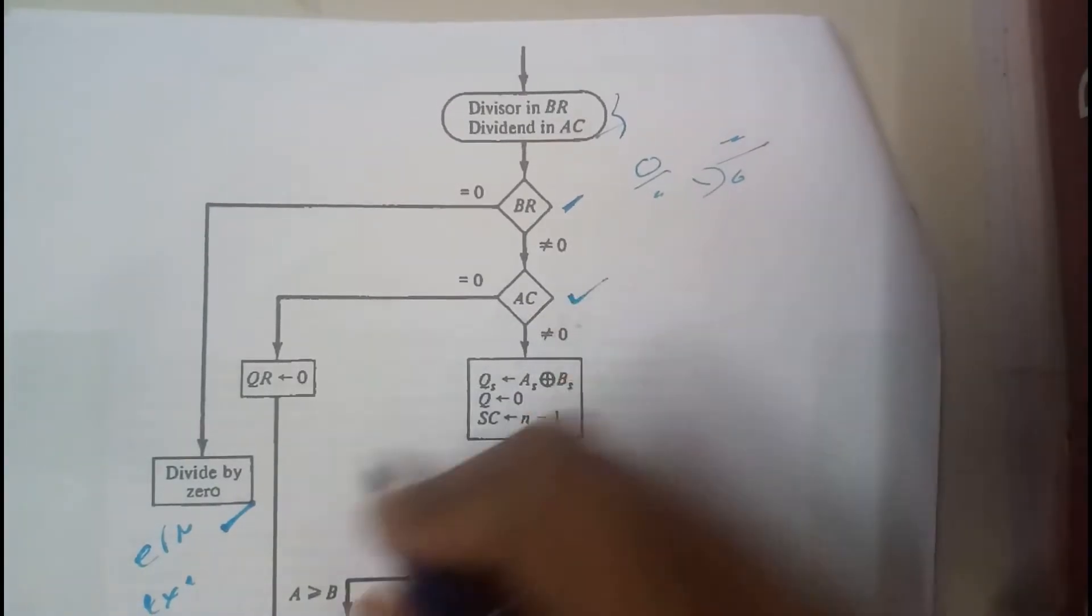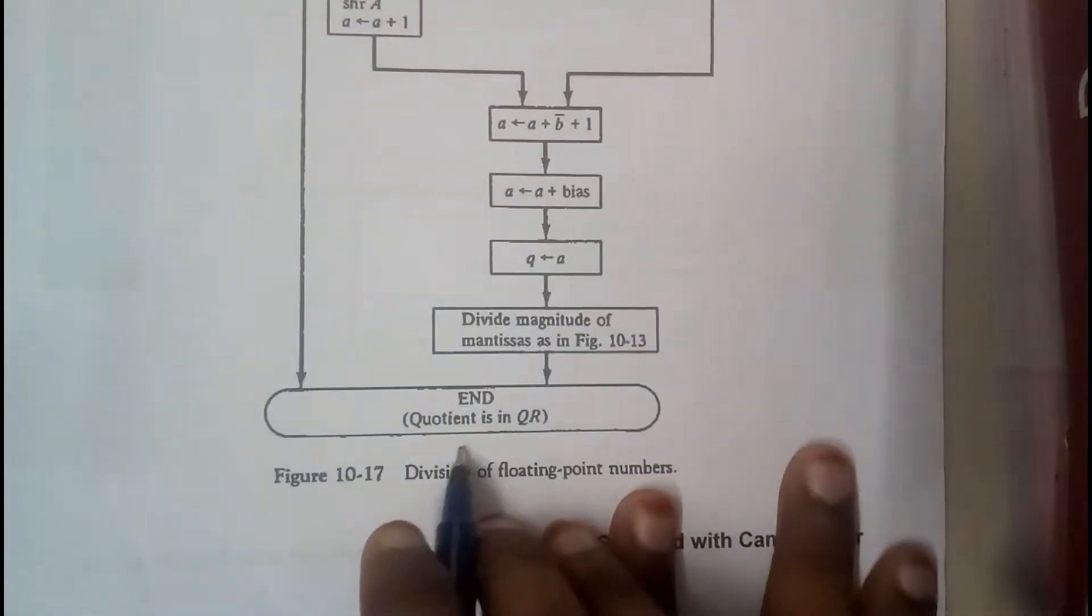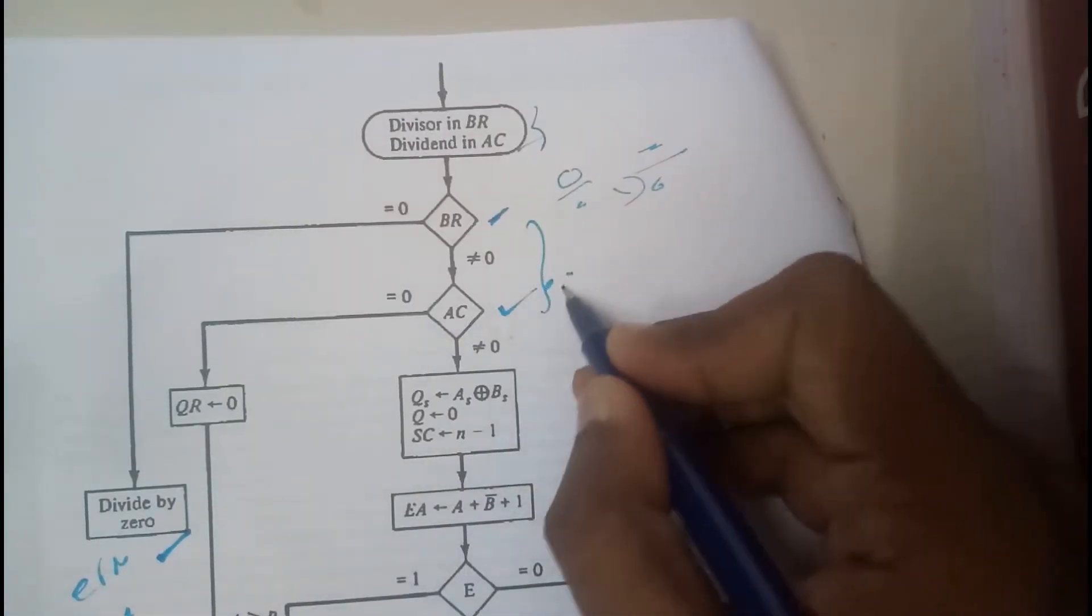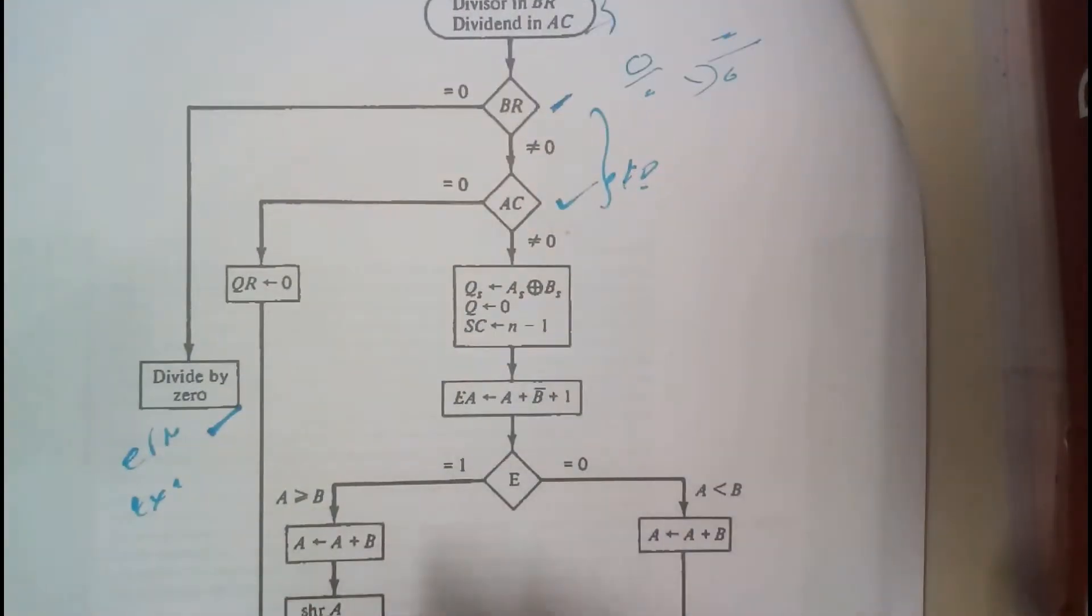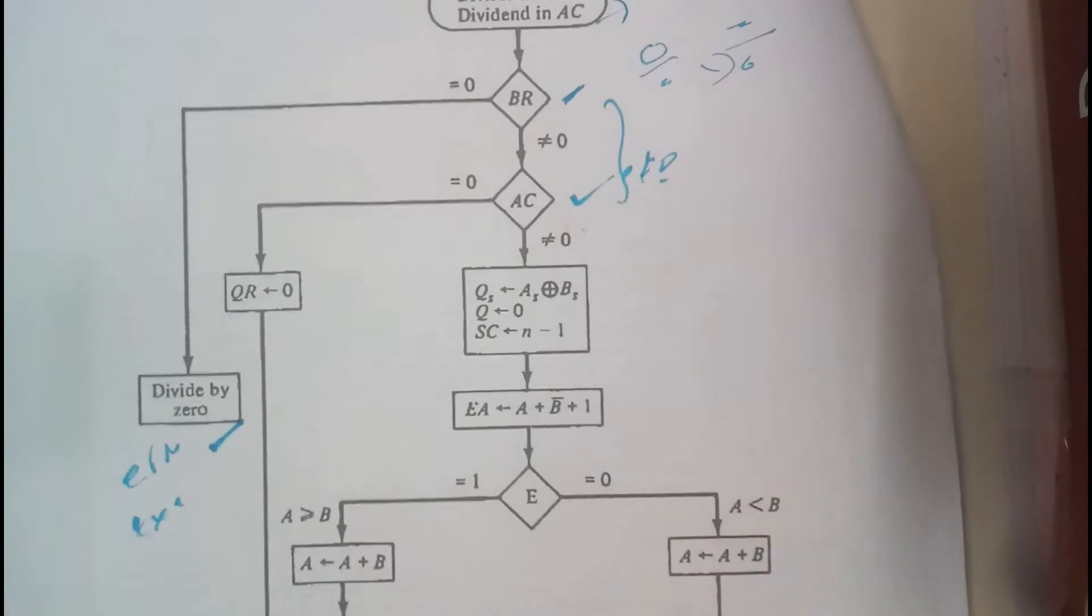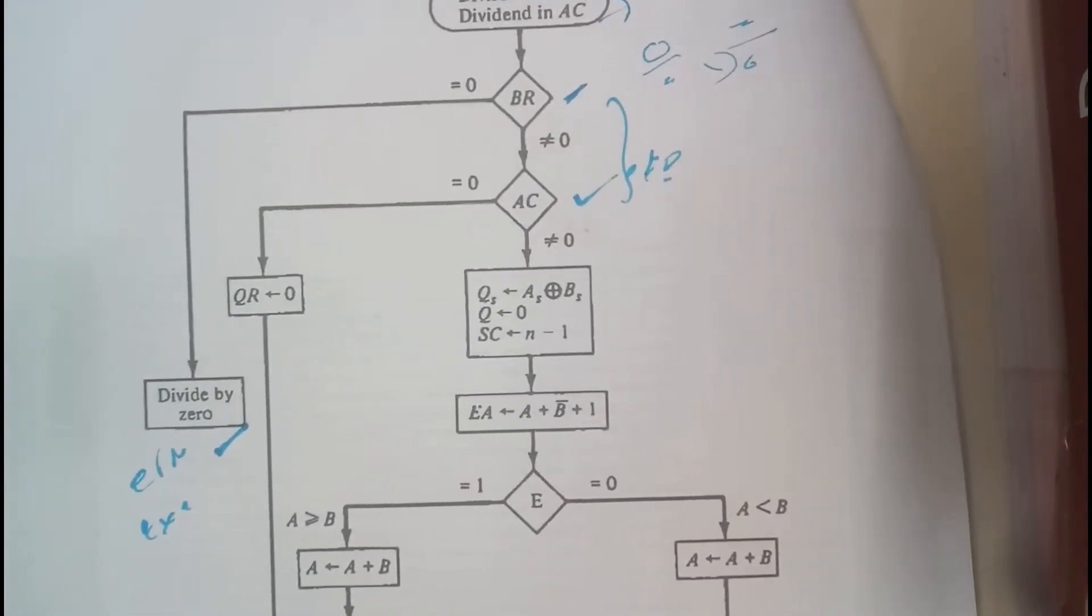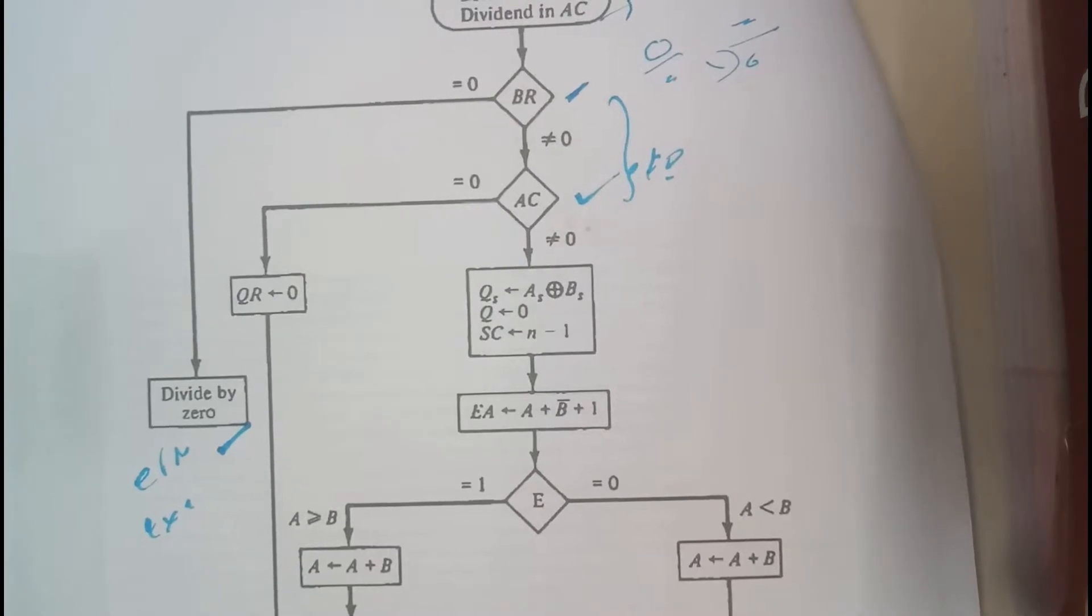If AC equals zero, we will be making QR, that is the coefficient, to zero and ending the program right there. If both of them are not equal to zero, then we will be entering into the program. This situation you will find in each and every algorithm of floating point.